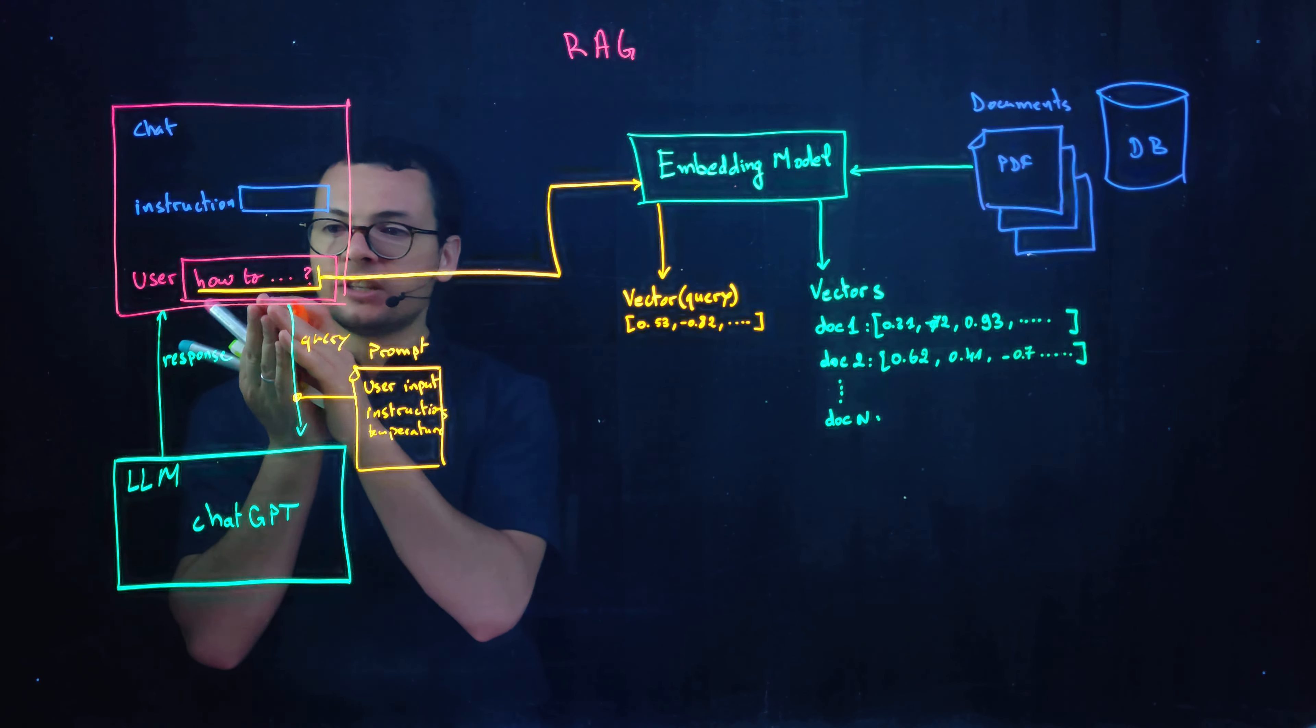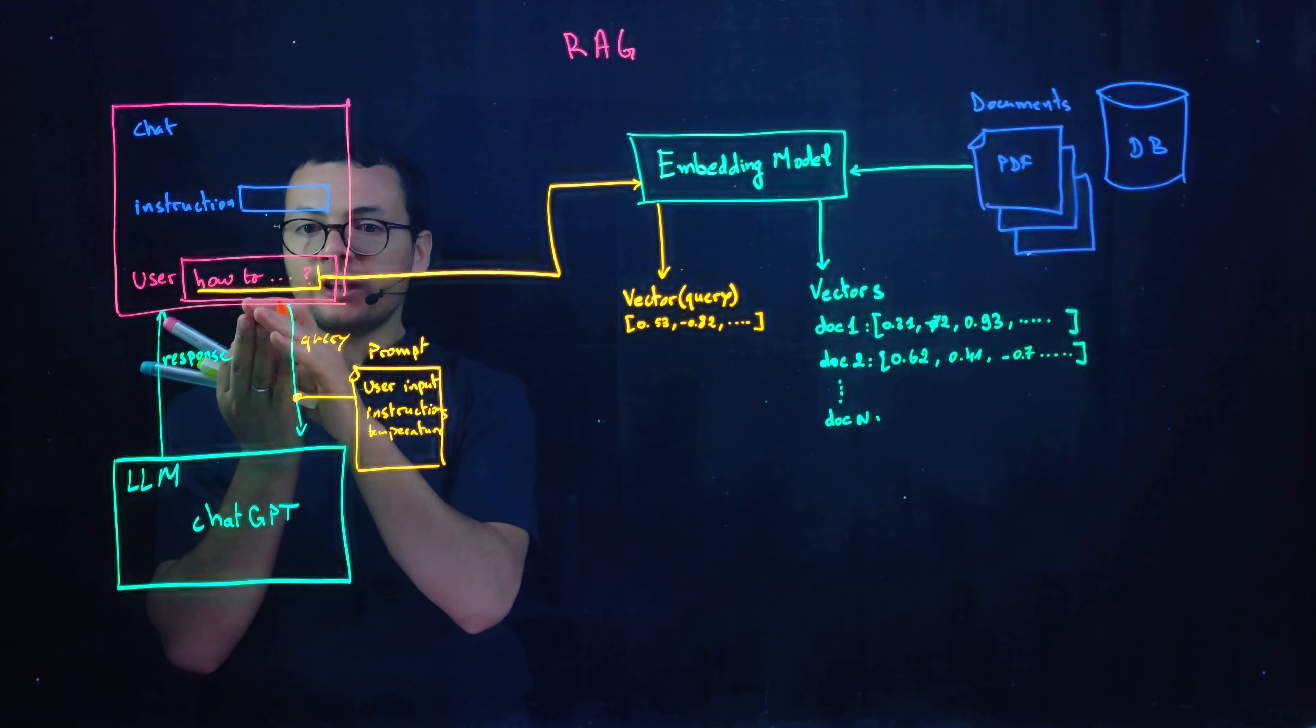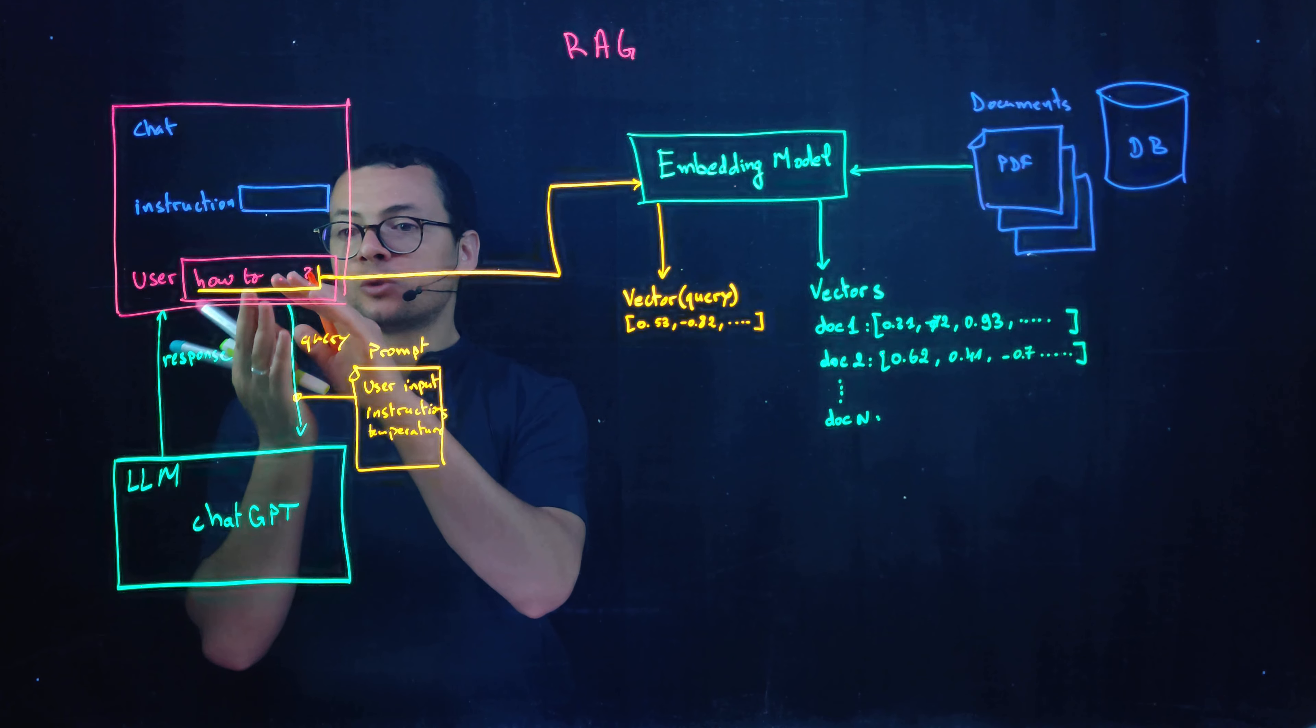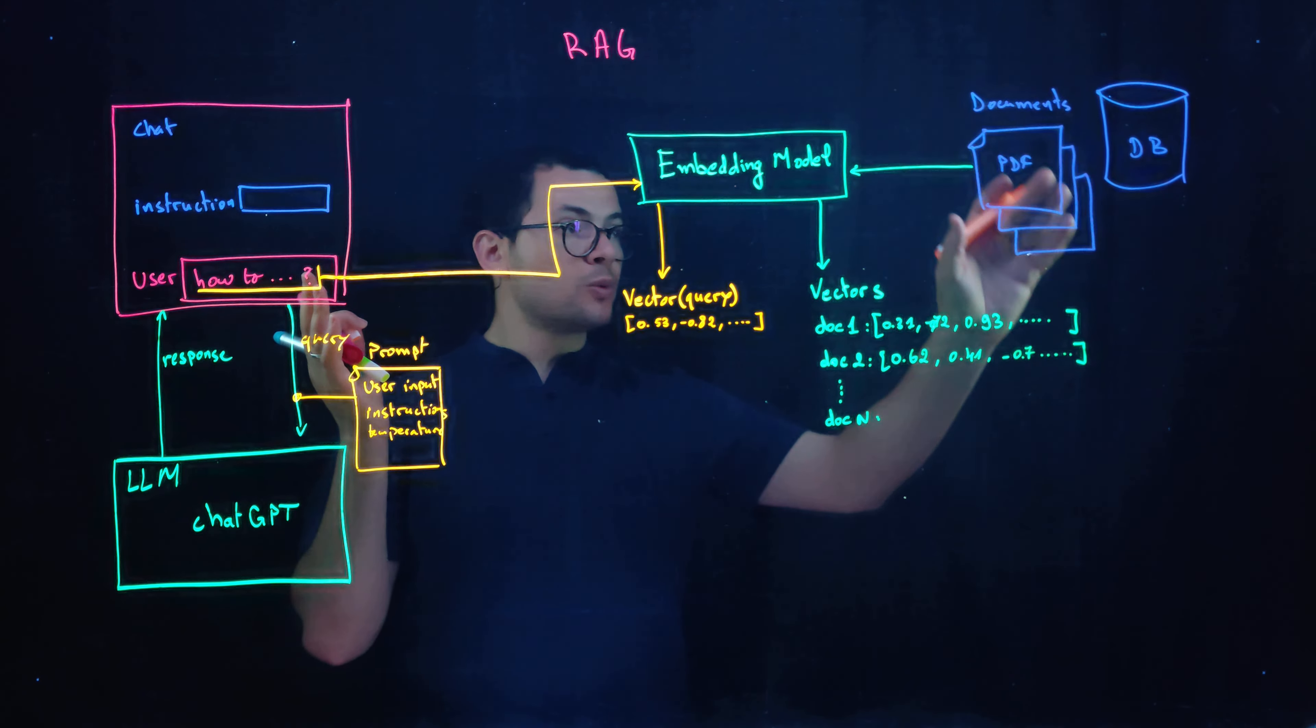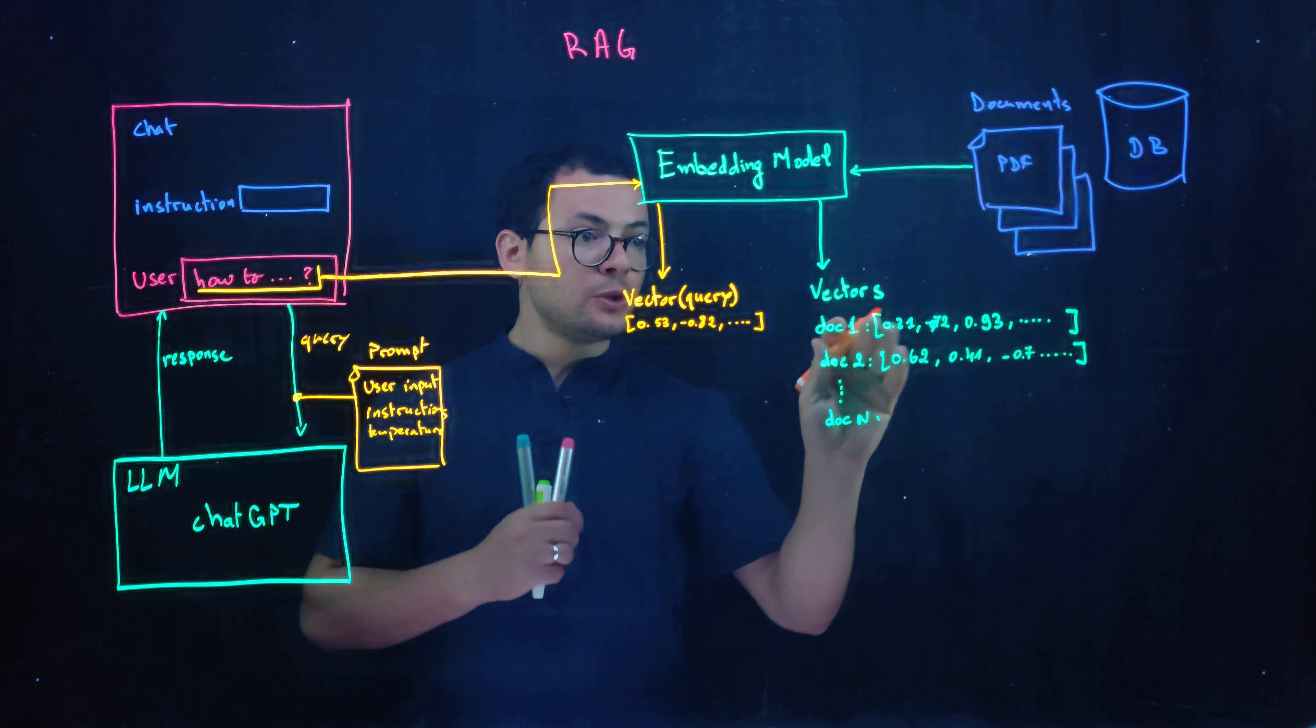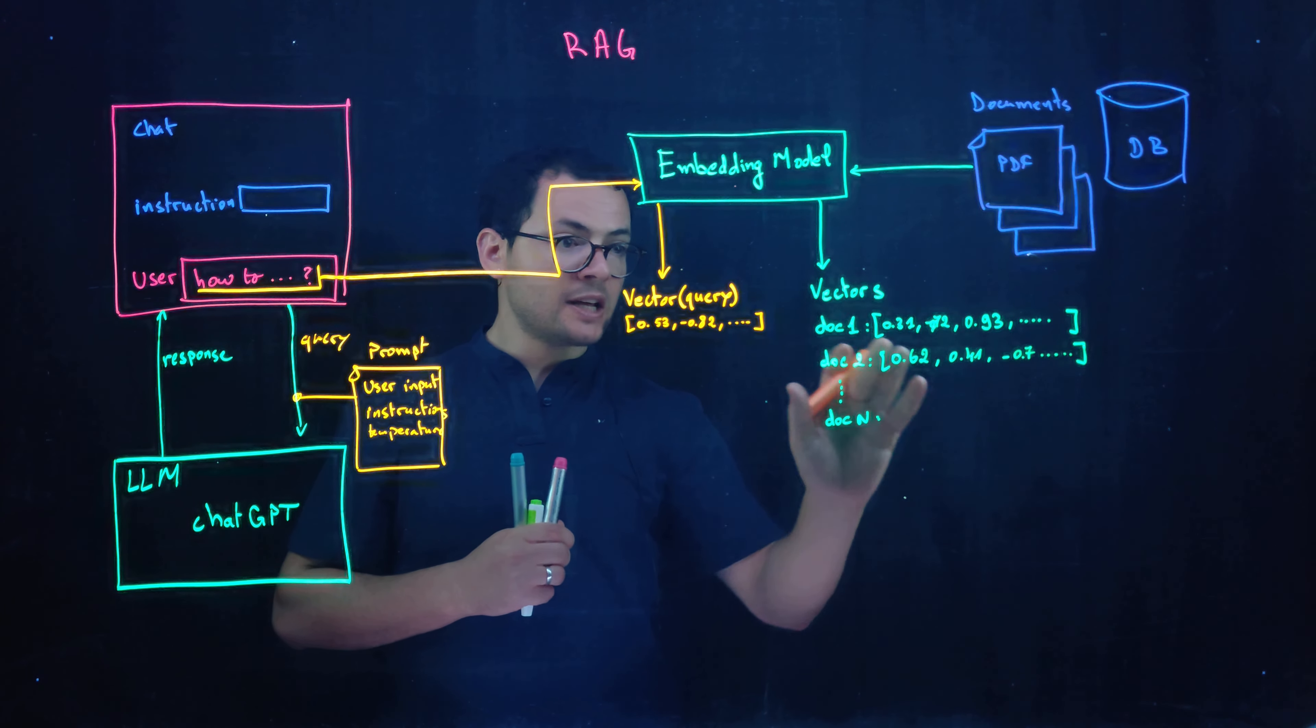And what we want to do here is that reading this user query, we want to get the documents that are related to that user query. So we'll search within those documents. We'll perform that search operation using those vectors and those indexes.